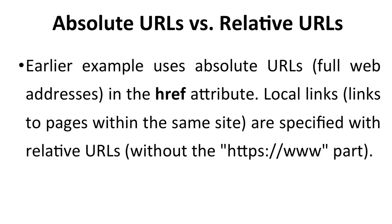Now, absolute URLs versus relative URLs. Earlier examples use absolute URLs — full web addresses — in the href attribute. Local links to pages within the same site are specified with relative URLs, which do not include the HTTPS or WWW part.